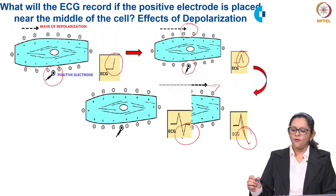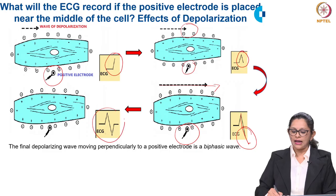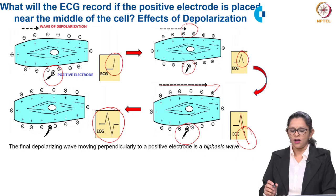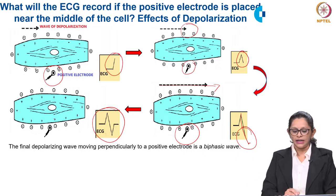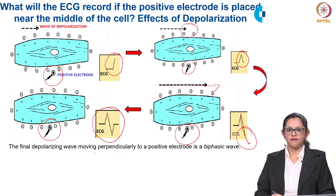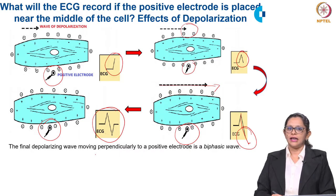When complete depolarization of the muscle takes place, it will be recorded as a biphasic wave on ECG. The final depolarization wave, as it moves perpendicularly to the positive electrode, will produce a biphasic wave on the ECG. This is the basis of recording of ECG due to the effect of depolarization of the heart muscle.